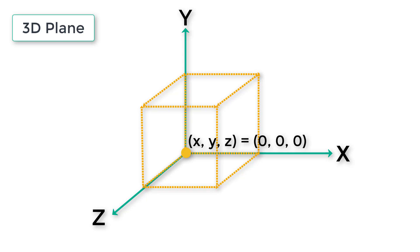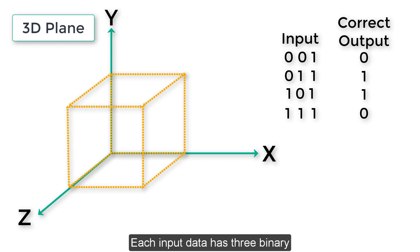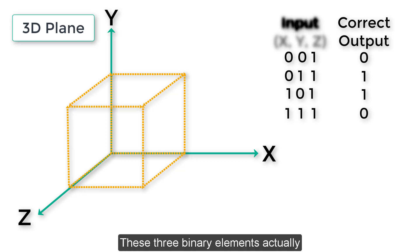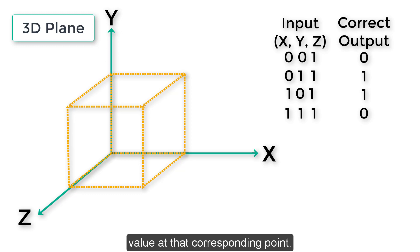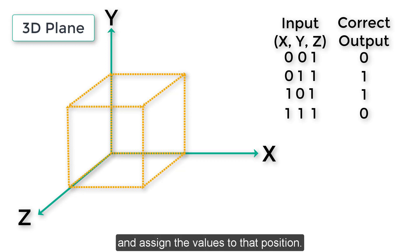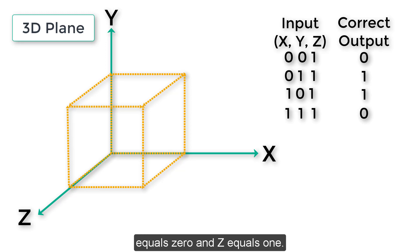Let's compare our dataset with the 3D plane. We have a dataset where there are inputs and correct outputs. Each input data has three binary elements and each correct output has only one binary element. These three binary elements represent the X, Y, Z position in the 3D plane, and the correct output represents the value at that corresponding point. Let's find the positions of the input data and assign values to those positions. Starting with the first dataset: input 0, 0, 1 with correct output 0 means x equals 0, y equals 0, z equals 1.